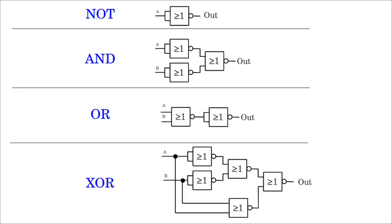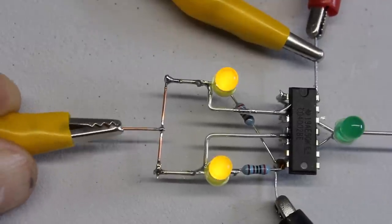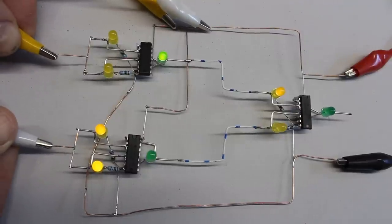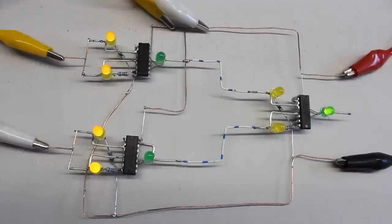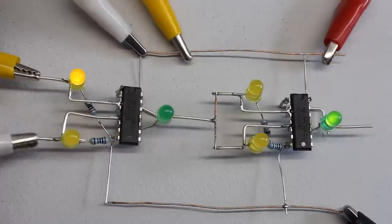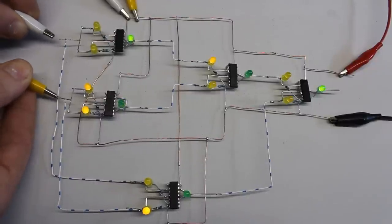NOR gates, or alternatively NAND gates alone, can be used to reproduce the function of all other logic gates, which is why those gates are called universal logic gates. I would like to demonstrate that principle with NOR gates. You can find the circuits using NAND gates on the project page. The NOT gate is made by joining the inputs of a NOR gate. Three NOR gates are required to create an AND gate. The OR operation is implemented by inverting the NOR gate with a NOT gate. Five NOR gates are required to create an XOR function.